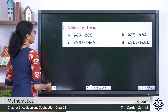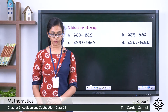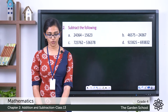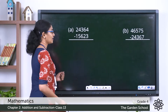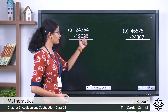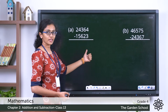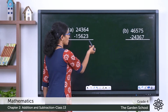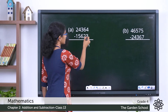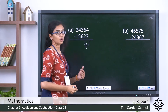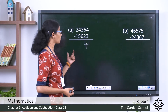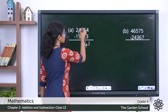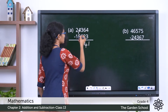Let's discuss question number two: subtract the following. Question A is 24,364 minus 15,623. We subtract the ones first, then the tens, then proceed to the higher places. Four ones minus three ones is one. Six minus two is four. Three minus six — we cannot do that, so we borrow one thousand from the thousands place and give it to the hundreds place.